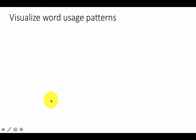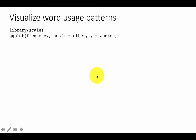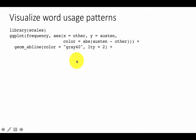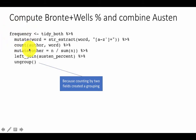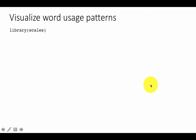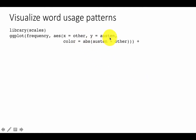Now we can start visualizing word usage patterns. First, load the library 'scales' — install it with install.packages('scales') if needed, though it may be included with ggplot2. We call ggplot(frequency), where frequency is the data frame with word usage patterns for all three authors. The y aesthetic is the Jane Austen proportion column, and x (labeled 'other') is the usage proportion for Brontë sisters and HG Wells.